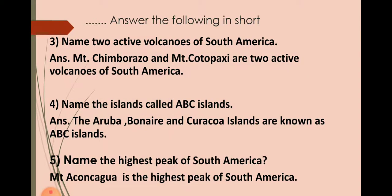Question number three: Name two active volcanoes of South America. Mount Chimborazo and Mount Cotopaxi are two active volcanoes of South America. Question number four: Name the islands called ABC islands. The Aruba, the Bonaire, and the Curaçao islands are known as ABC islands.